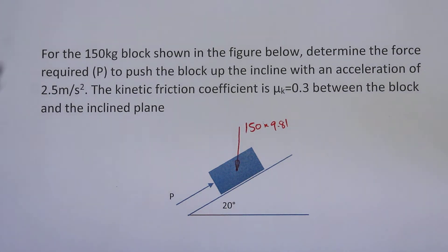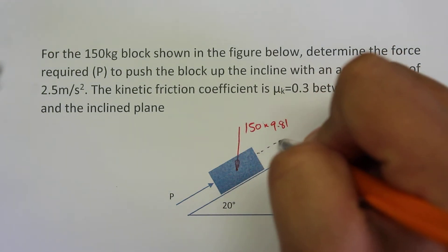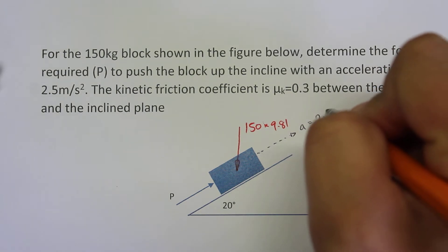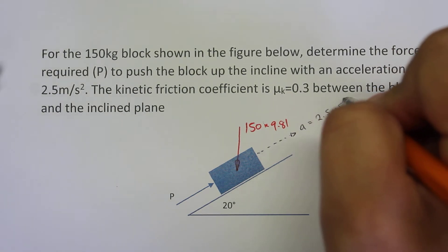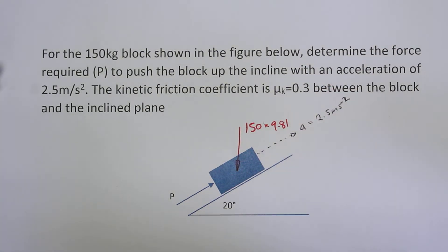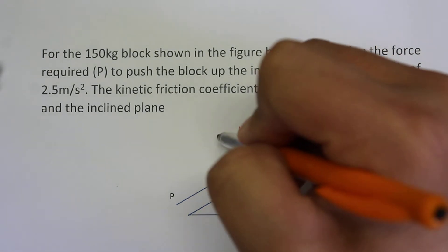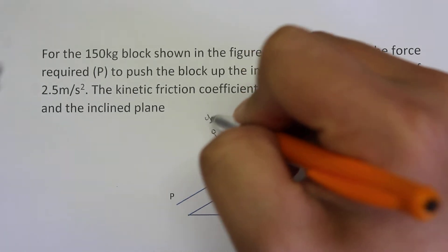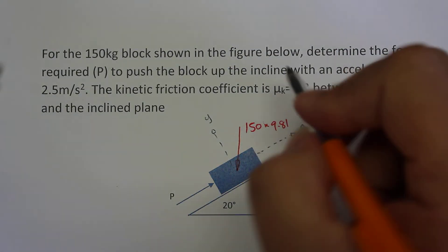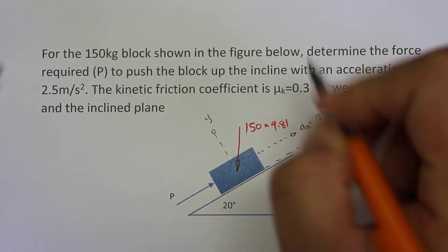Now the next thing is we know that the block is going to be moving up the incline. So we have an acceleration of the block A, and this is equal to 2.5 meters per second squared. Now if we call this the x-direction towards the right and we call this the y-direction going normal to the surface, we would call this acceleration the acceleration in the x-direction.